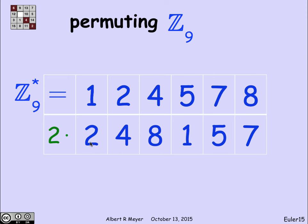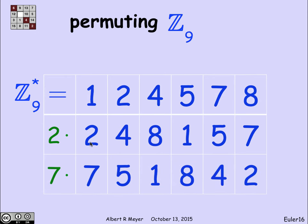Let's do one more example to hammer the point home. If I multiply by 7: 7 times 1 is 7, 7 times 2 is 5, 4 times 7 is 28 which is 1 mod 9 because 3 times 9 is 27 leaving remainder 1, 5 times 7 is 35 remainder 8, 7 times 7 is 49 remainder 4, 7 times 8 is 56 remainder 2. Again, it's the same six numbers, just permuted.